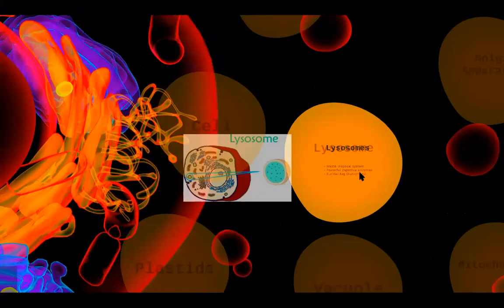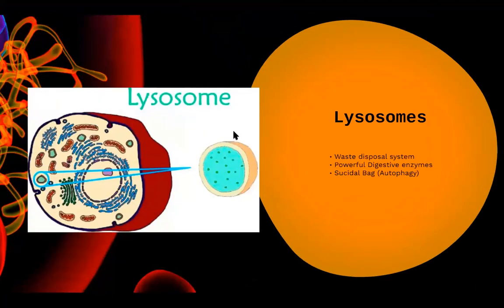You remember lysosomes — we discussed them a little when talking about the Golgi apparatus, because these tiny organelles are formed by the Golgi apparatus. They are the waste disposal system for the cell. For example, any foreign material entering your cell — like bacteria, food particles, or any cell organelle that has become non-functional — will go to the lysosome.